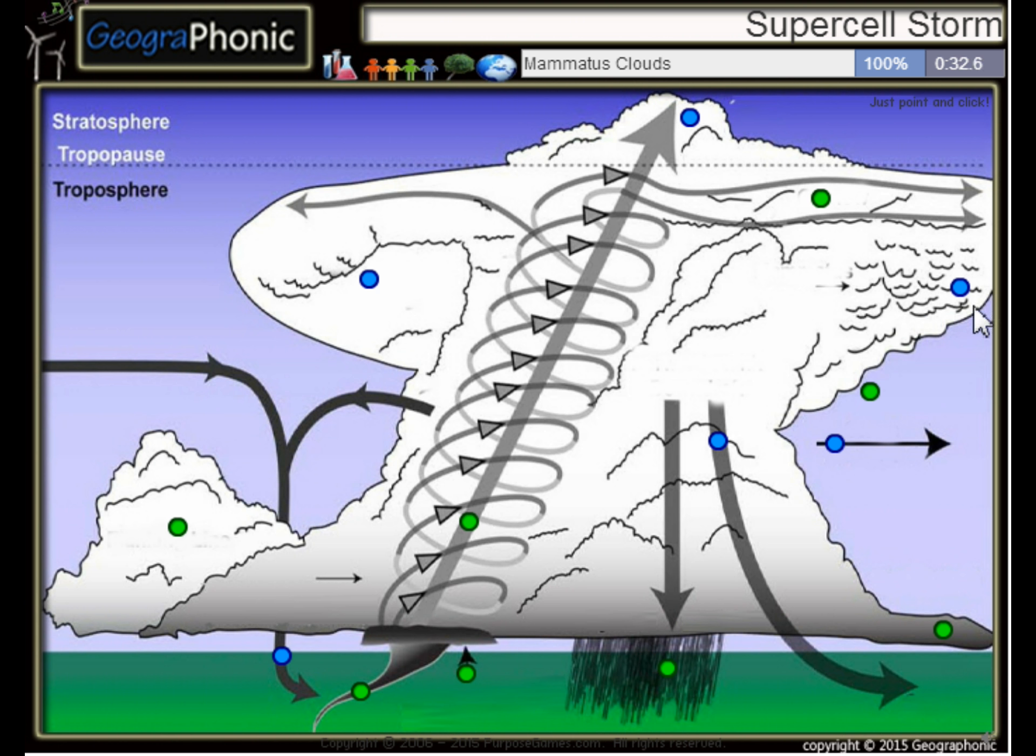These are mammatus clouds. Here we see a forward flank downdraft. This is an overshooting top in the stratosphere.